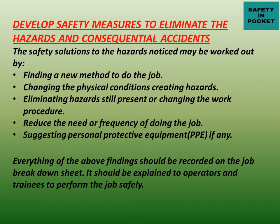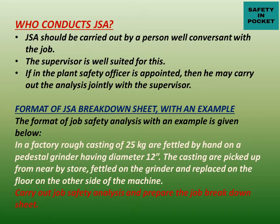Further safety measures include: eliminating hazards still present or changing the work procedure; reducing the frequency of doing work with high hazards; and suggesting appropriate personal protective equipment (PPE) for areas where hazards recur. All findings should be recorded on the job breakdown sheet and explained to operators and trainees to perform the job safely.